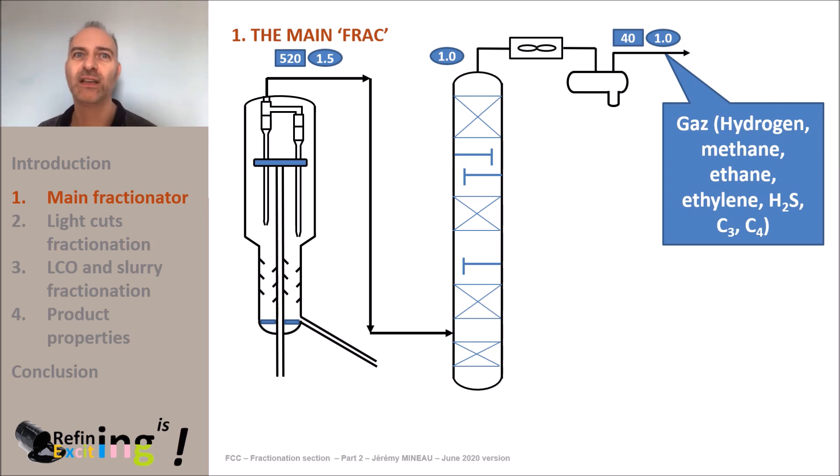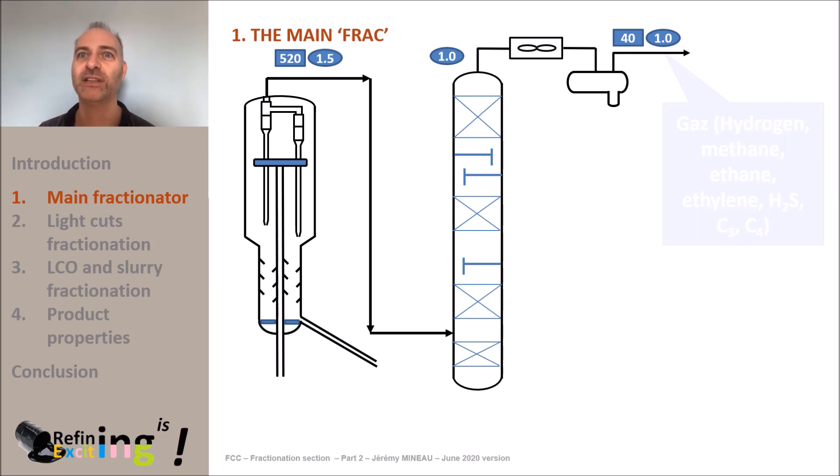The liquid that is condensed in the overhead condenser and recovered in the reflux drum is on one hand the gasoline cut produced in the reactor and on the other hand some liquid water.